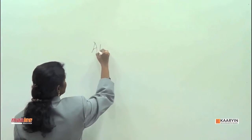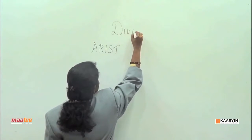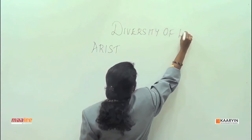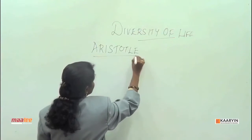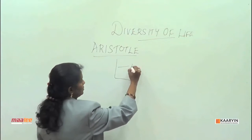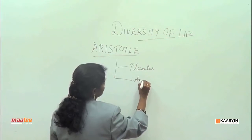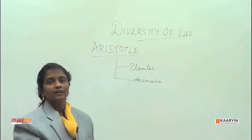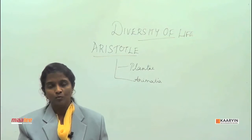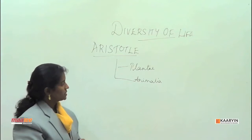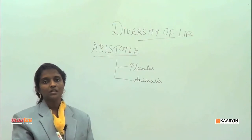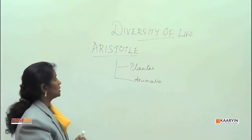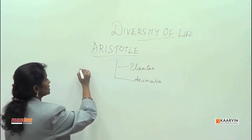Let me begin with Aristotle's Two Kingdom Concept. In this concept, he divided the world's organisms into Plantae and Animalia. He also categorized animals into warm-blooded and cold-blooded animals. His student Theophrastus categorized plants into herbs, shrubs, and trees, whereas animals were divided into land dwellers, water dwellers, and air dwellers. This overall system is called the Two Kingdom Concept.